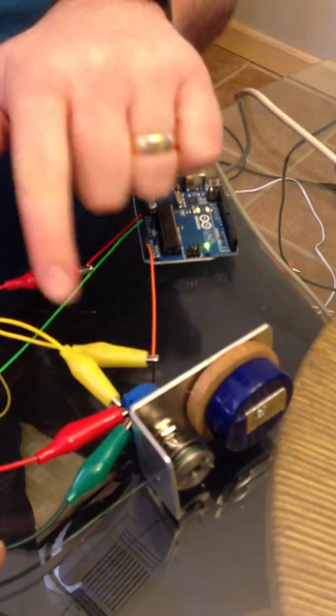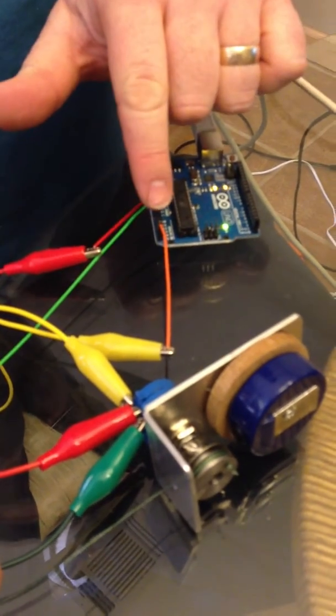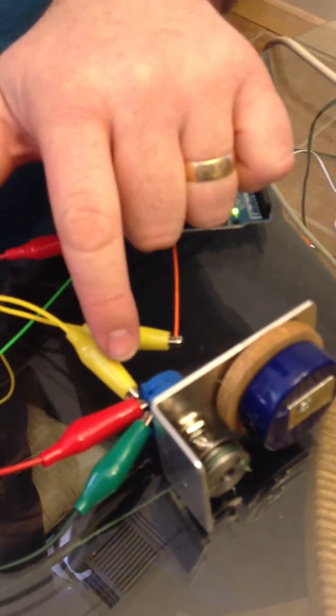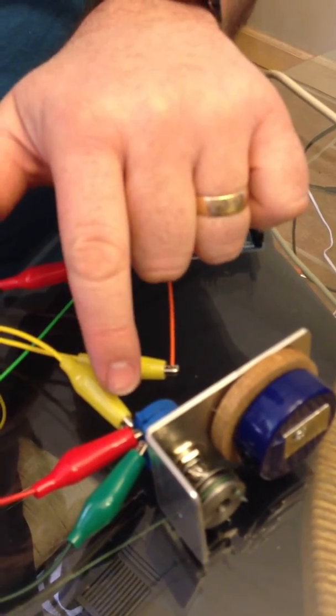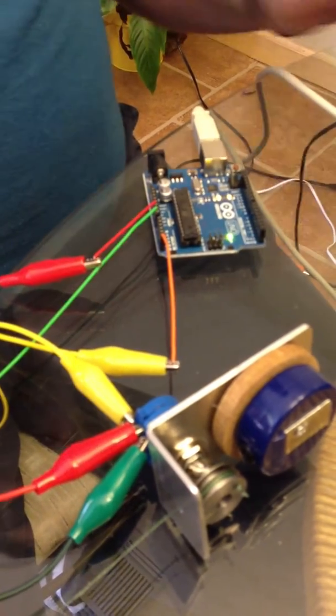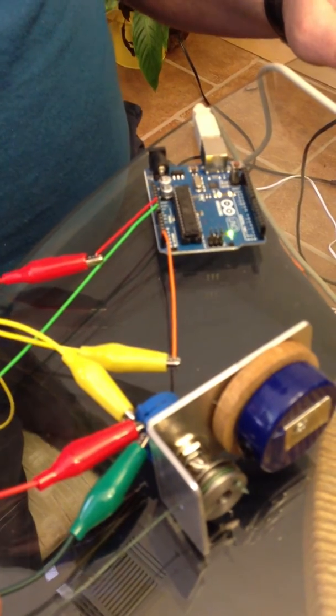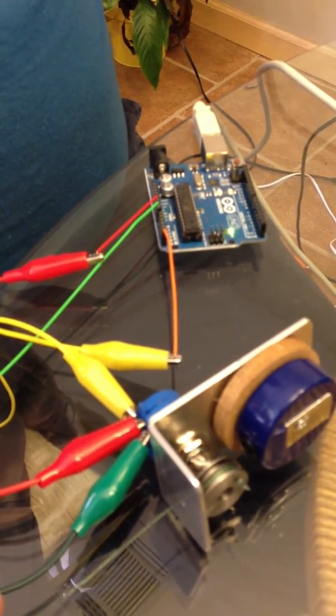Right here, this one. The wiper, which is a yellow one, is on the outside pin on the potentiometer. And if you look, I don't know how well this will show, but if you look right here...